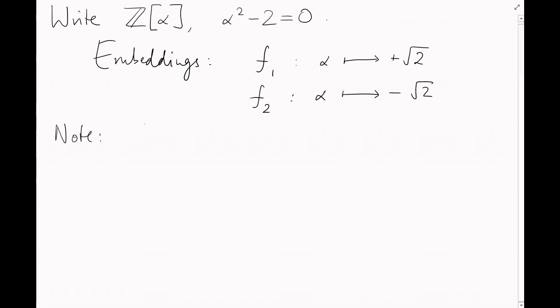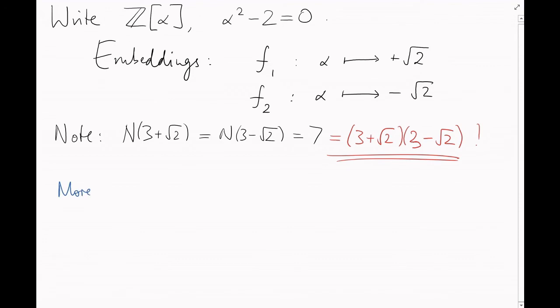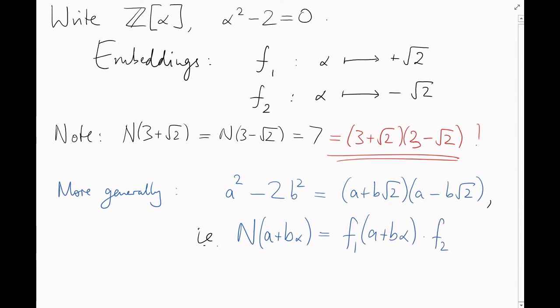Why is that important? Well, in my example a second ago, I said that 3 plus root 2 and 3 minus root 2 have the same norm, which is 7. Now it's true that neither of these lengths individually has much to do with 7, but you may have noticed that if you multiply both of their lengths together, what you get is exactly 7. That is, a squared minus 2b squared is a plus b root 2 times a minus b root 2. In other words, the norm of a plus b alpha is the product of both of its embeddings.